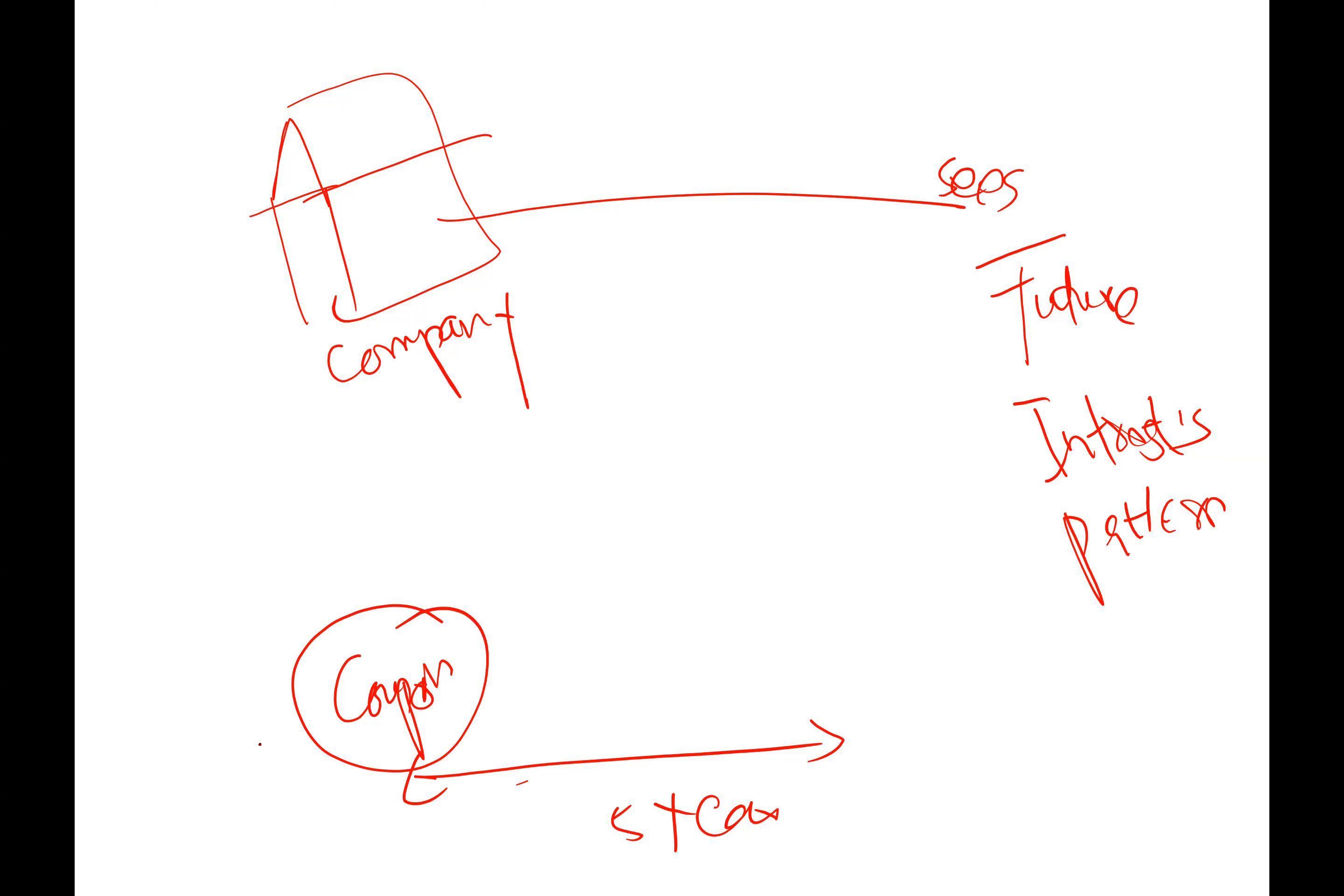A company sees future interest rates because bonds are issued for, for example, five years. What gives you the interest is called the coupon. It means the company locks its interest to the coupon rate for five years, and in five years anything can happen. So coupon rate is based on future outlook of interest pattern.